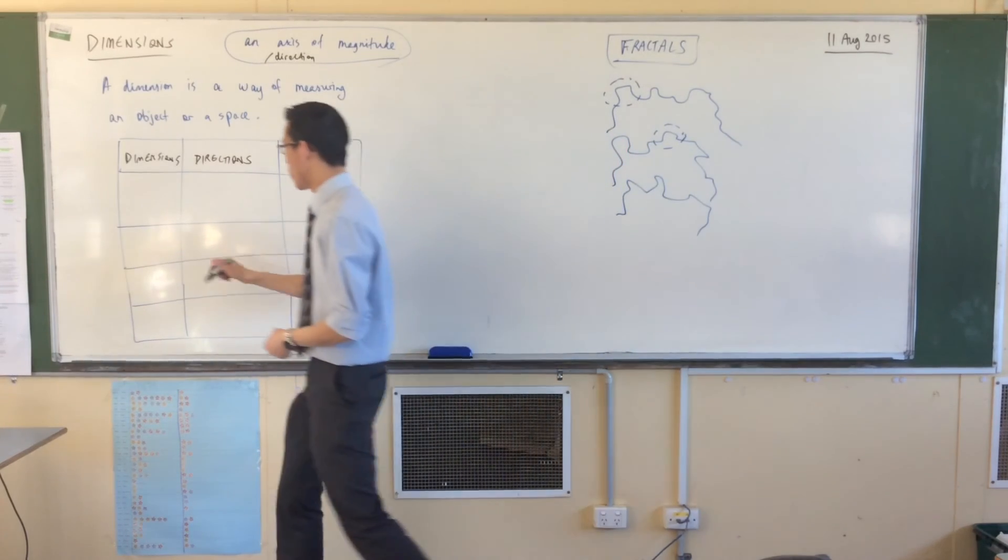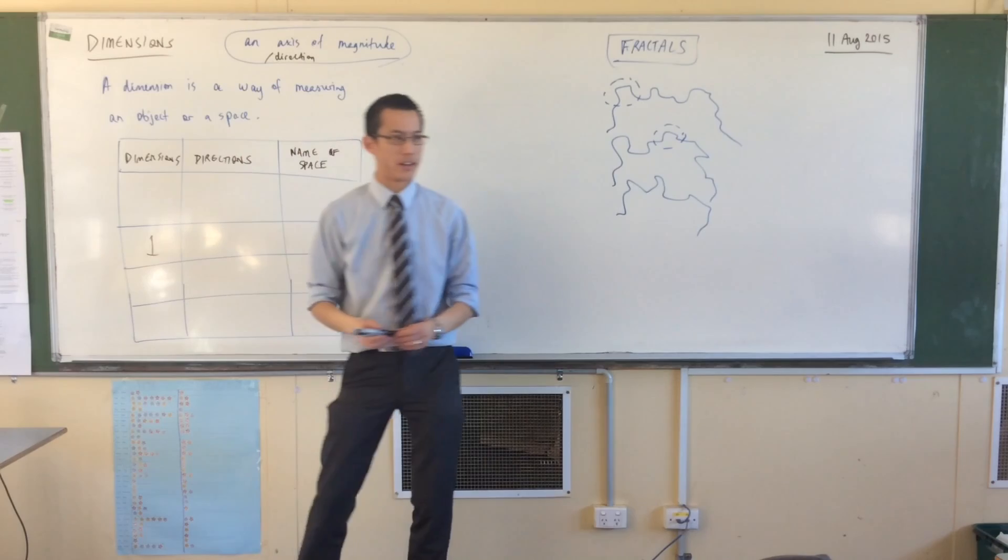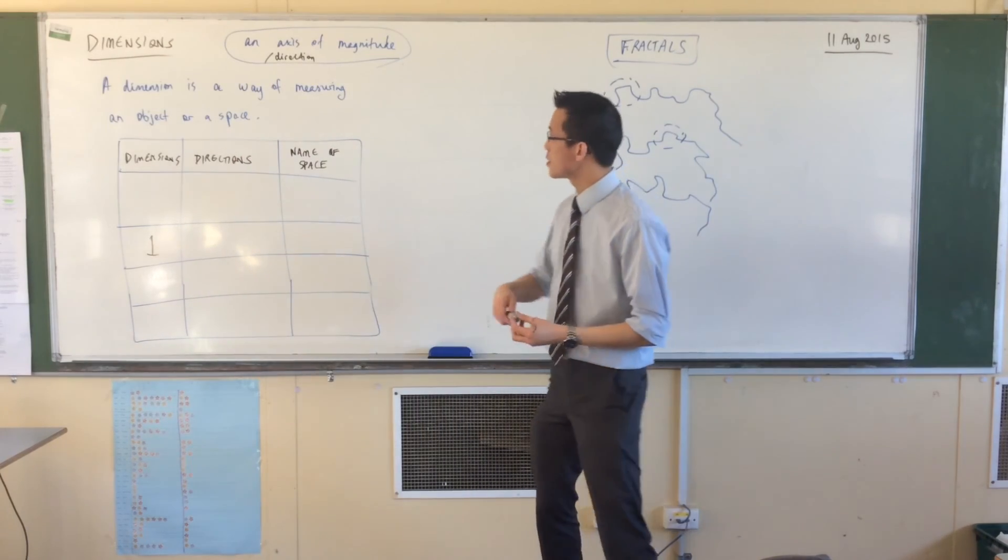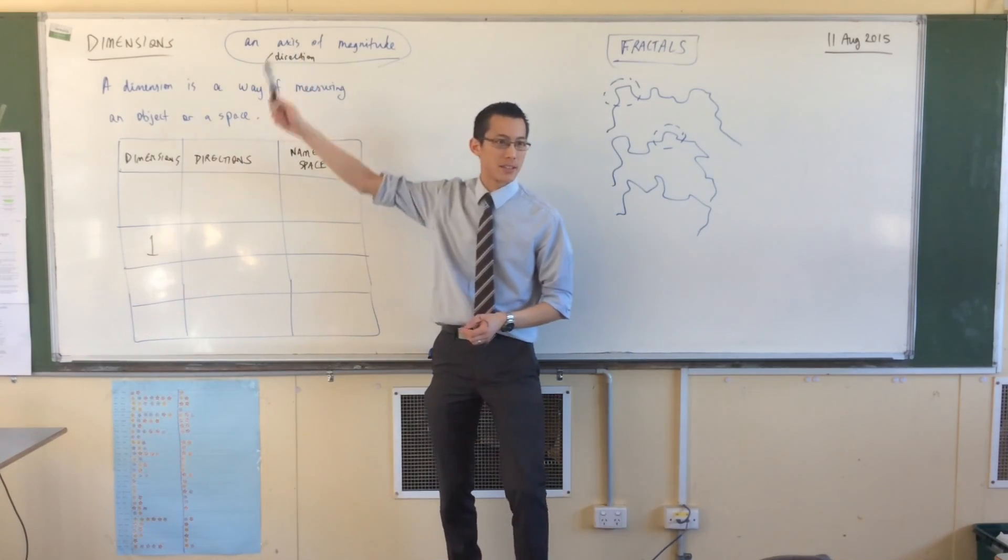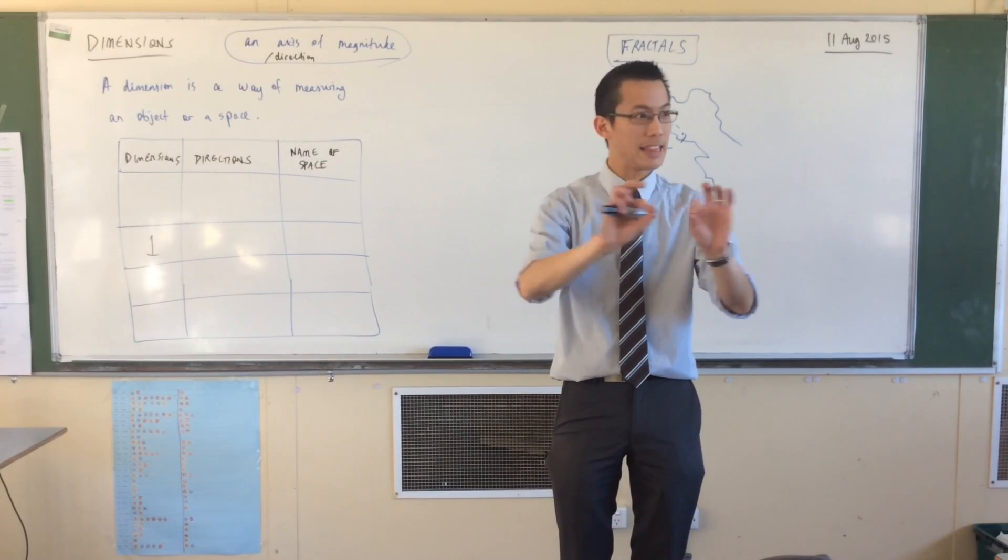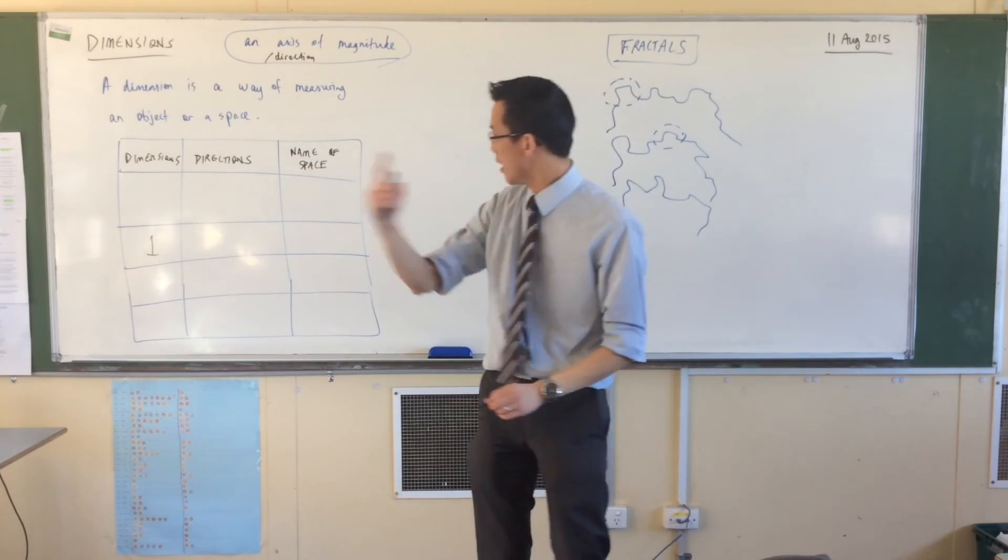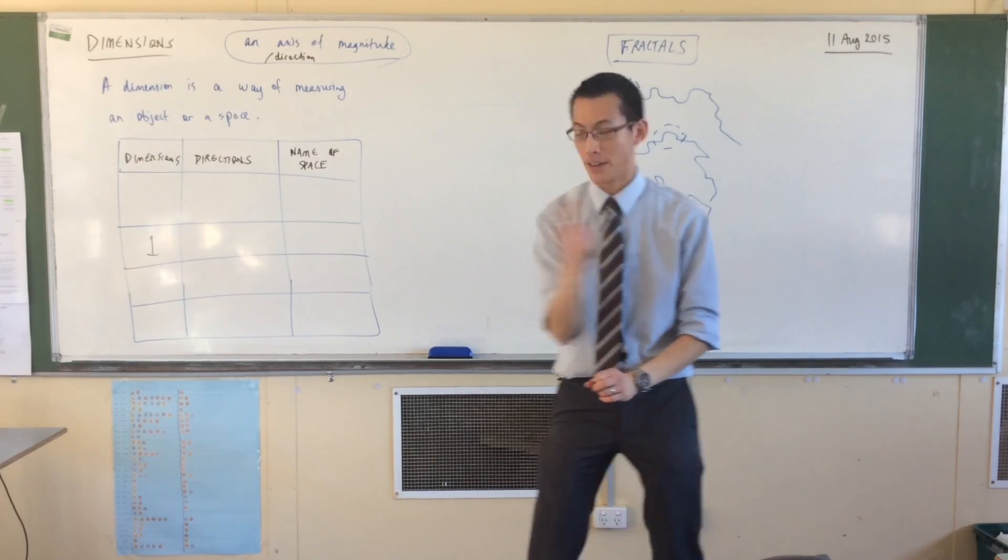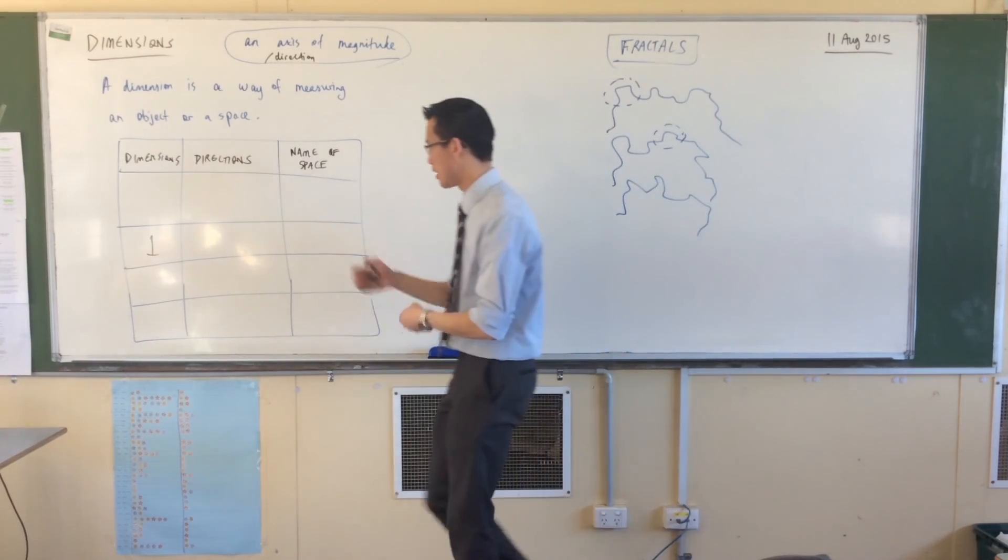What happens when you have an object or a space and it has one dimension? It means you have one axis. So for instance, I could say left and right. Left and right, that's a single direction that you can move in. A single axis.